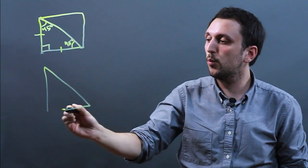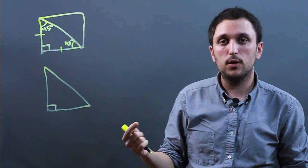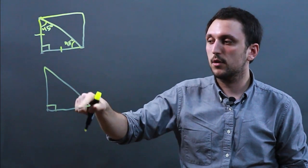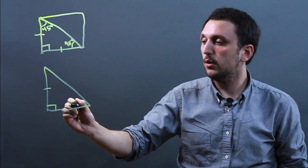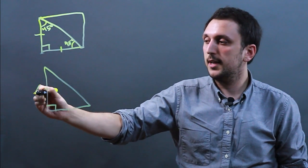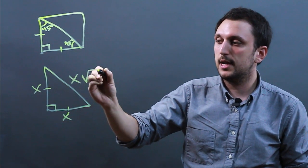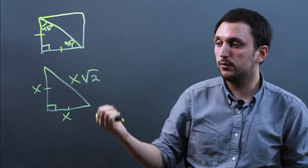Also, no matter what the size of the isosceles right triangle, the side lengths always have the same ratio. So for this side, if this side is x, this side will also be x and this side will always be x times radical 2, or the square root of 2.